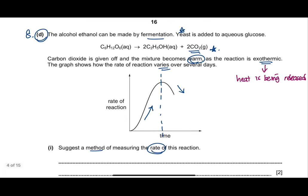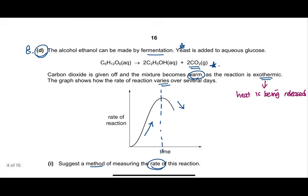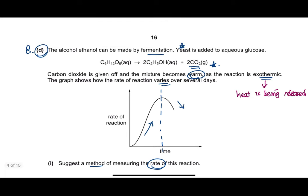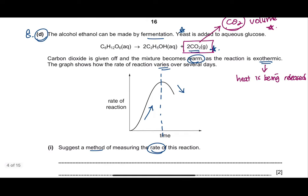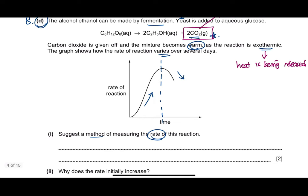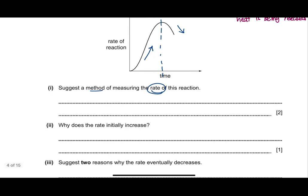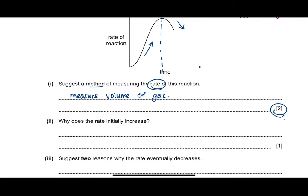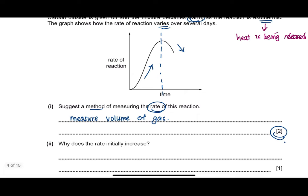To measure the rate of reaction in this fermentation experiment, you can measure the volume of carbon dioxide gas produced over time, similar to the previous questions where the volume of oxygen was measured. Since there are two marks available, you should state both: measure the volume of gas produced, and measure the time.